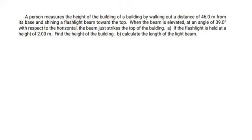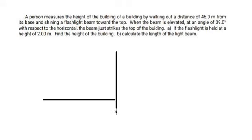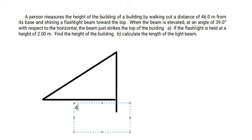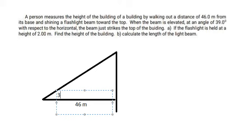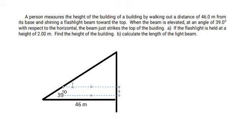Hello everybody. Today I will talk about physics. I will draw the diagram to illustrate how to answer the question. We have a distance here, and this is about the building and the light beam to the top of the building. We put the numbers in here: the distance is about 46 meters, the angle is about 39 degrees, and the height of the person is about 2 meters.